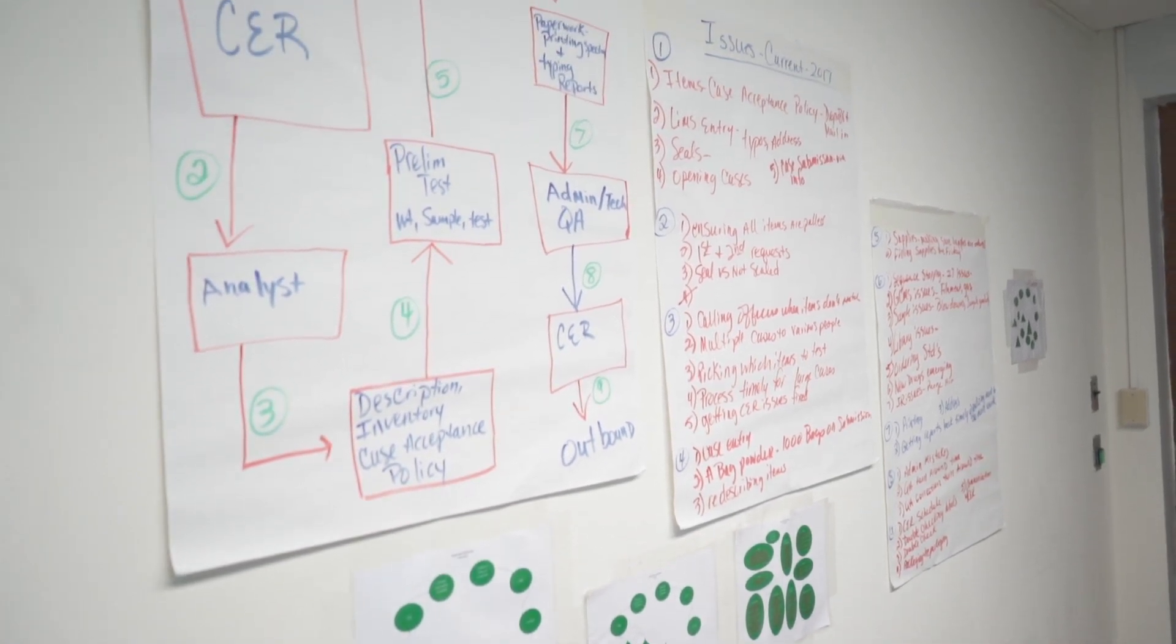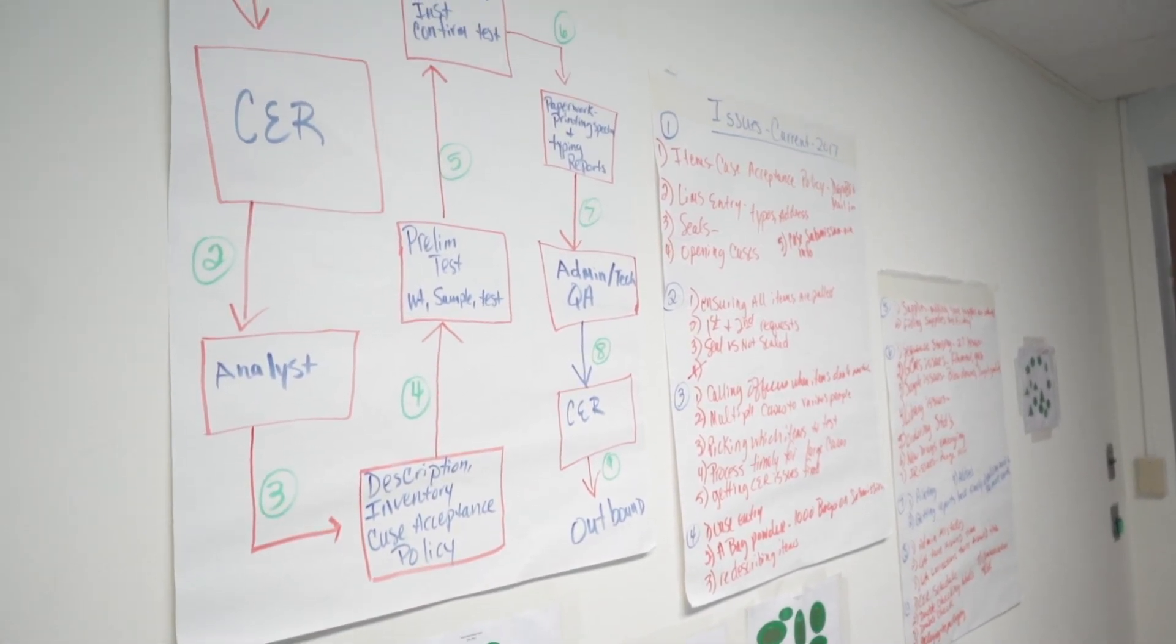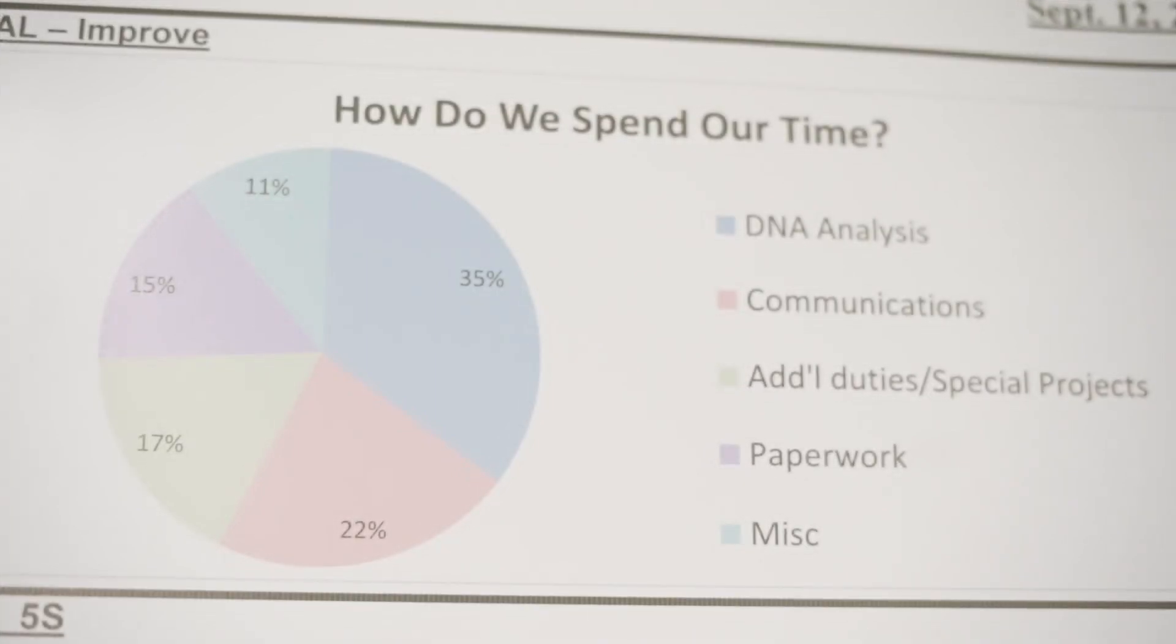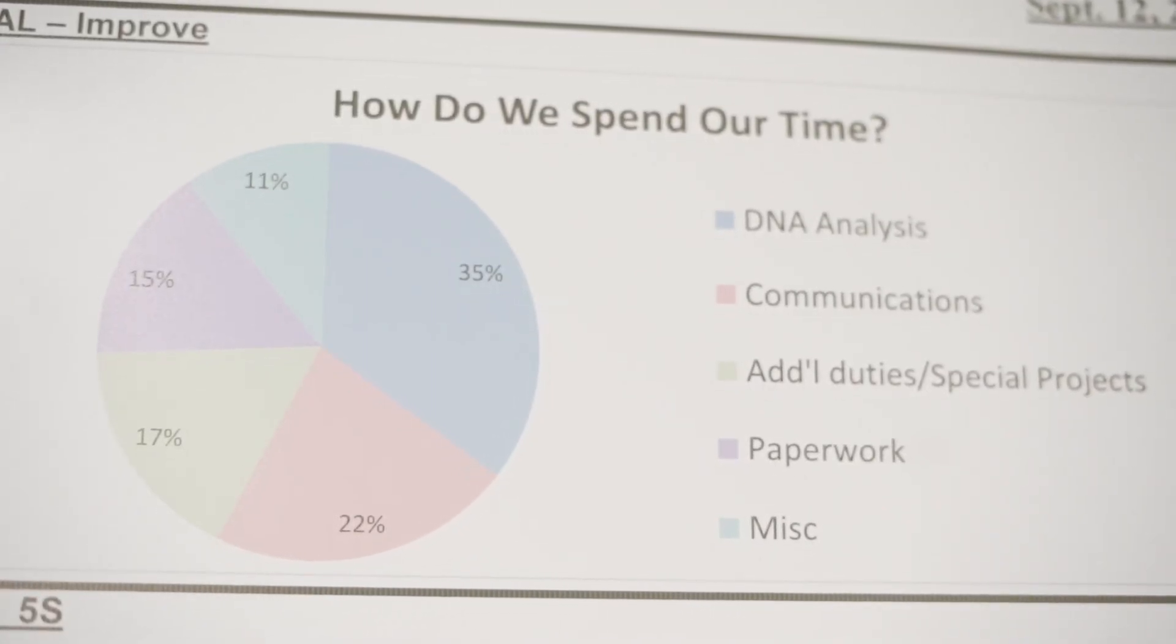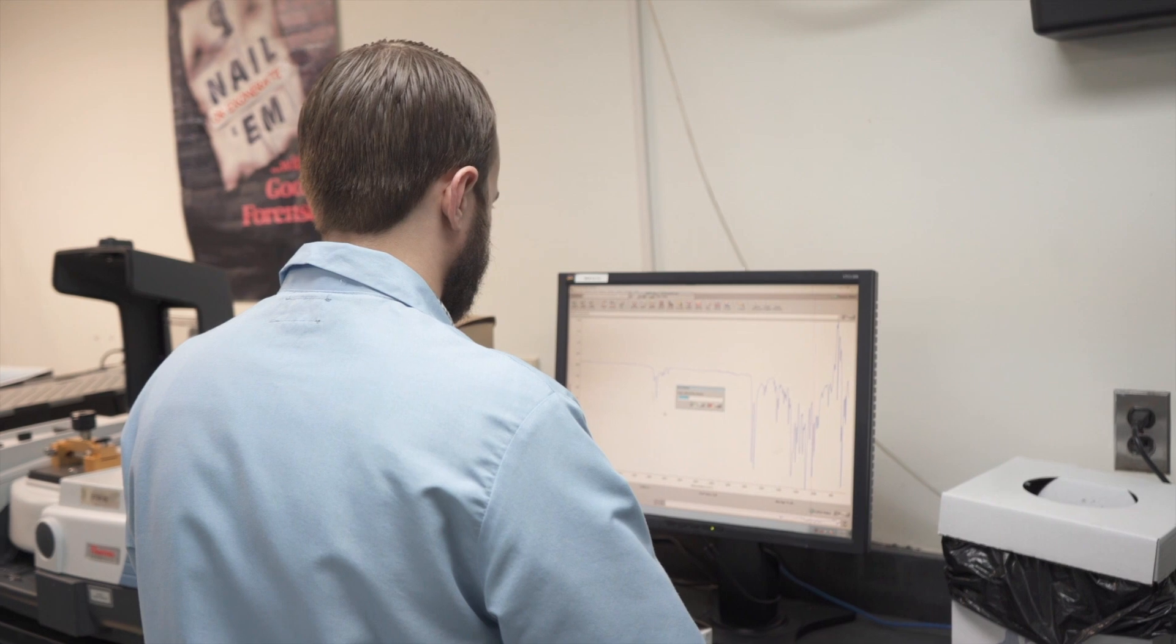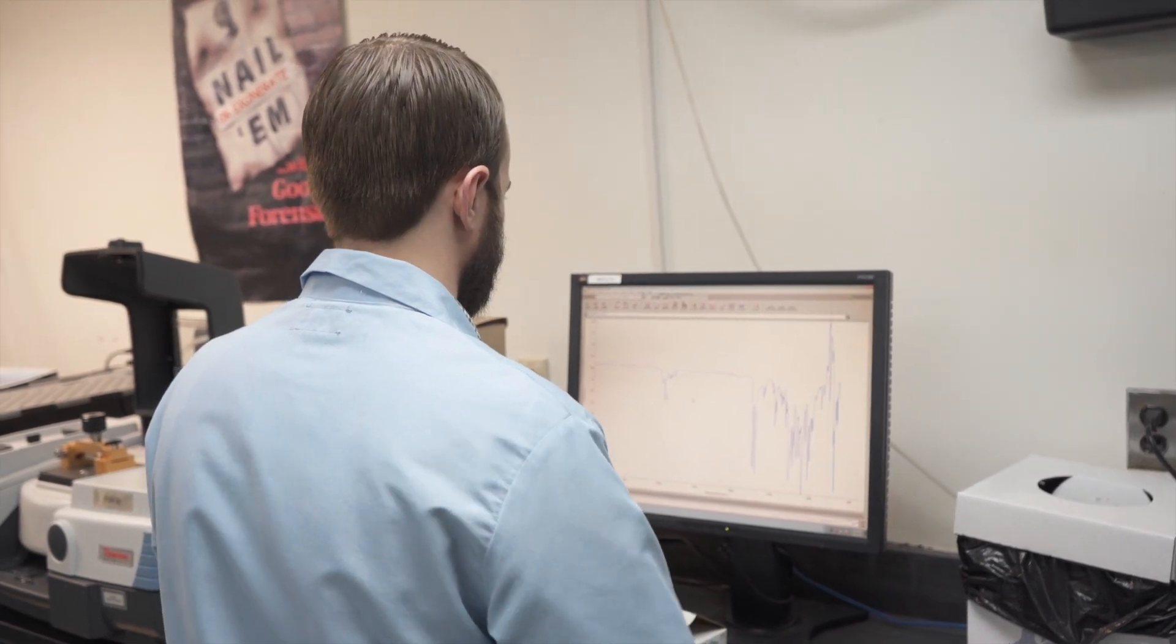In 2016, that backlog had built up to almost 5,000 criminal investigation cases waiting to be analyzed. But by the end of 2018, that number was down to just 2,300.